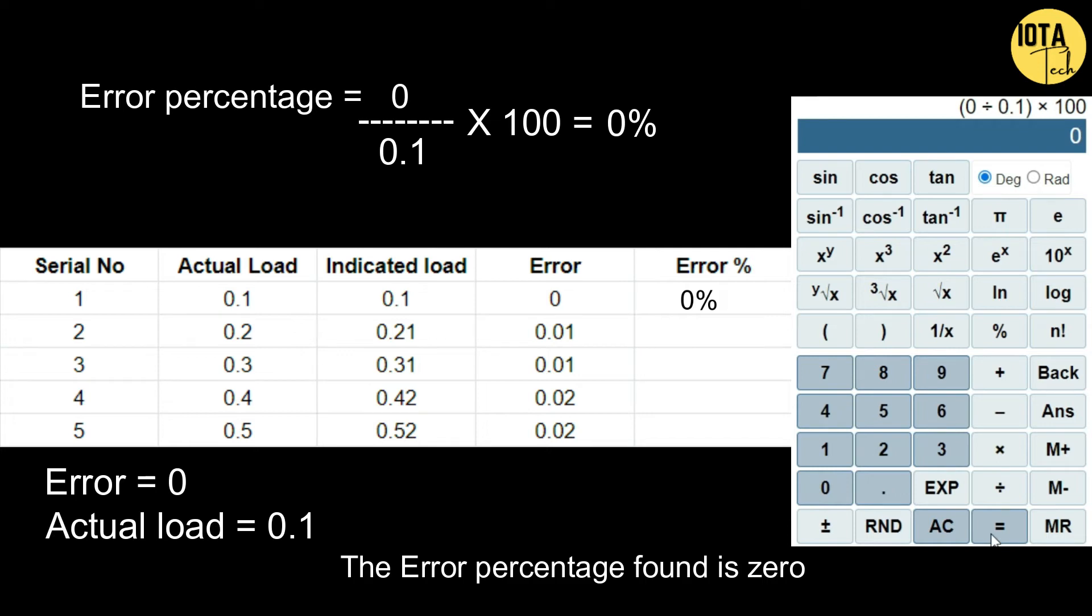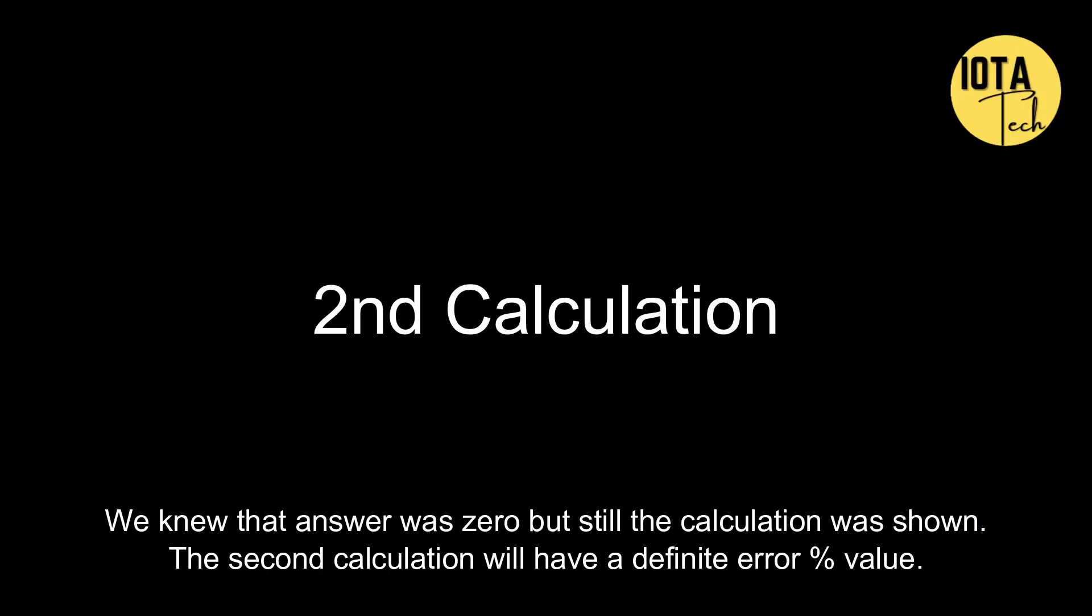The error percentage found is zero. We knew that the answer was zero but still calculation was shown. The second calculation will have a definite error percentage value.